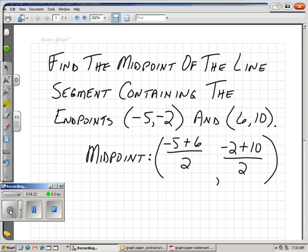So my midpoint, my x-coordinate, -5 plus 6 is 1. 1 divided by 2 is 0.5, but I'm going to leave it as 1/2. You can use 0.5 or 1/2. It's the same number. I'm going to leave it as 1/2. My y-coordinate is -2 plus 10. That's 8. 8 divided by 2 is 4. And there's my midpoint. It's a half a step to the right and 4 steps up. And you guys don't have to graph that, but I'm going to go ahead and show you what it looks like.